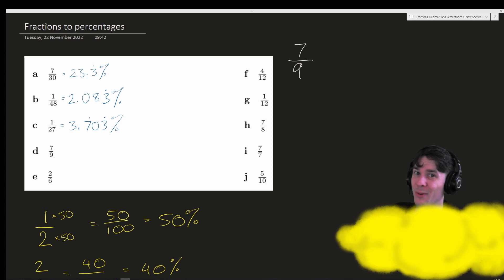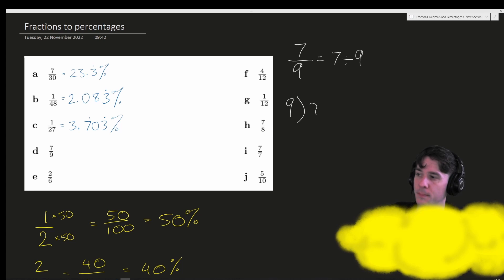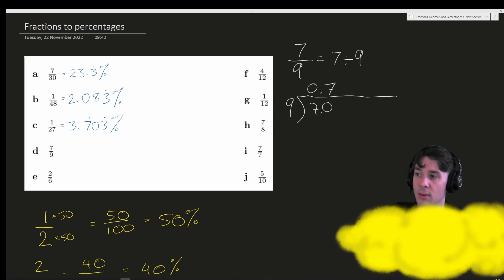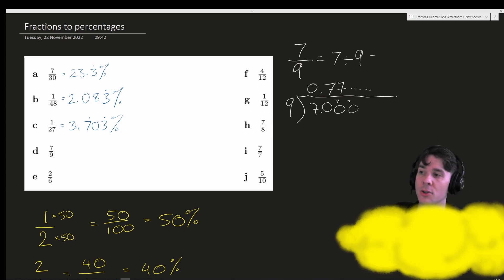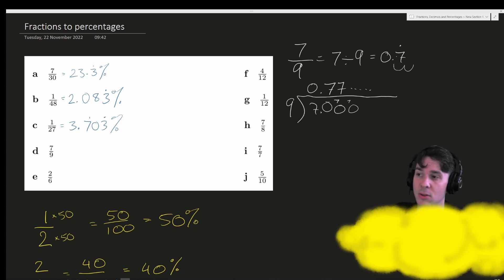7 ninths is difficult to turn into an equivalent fraction over 100, so we say this must be 7 divided by 9 — doing 9 into 7. 9 goes into 7 zero times; we add our decimal places. 9 goes into 70 seven times, which is 63, so there's a remainder of 7. We can see this is going to repeat forever, so this will be 0.7 repeater. To turn this into a percentage we multiply by 100, and since it's 7s forever, we get 77.7 repeater percent.